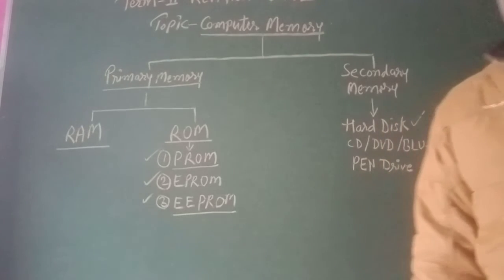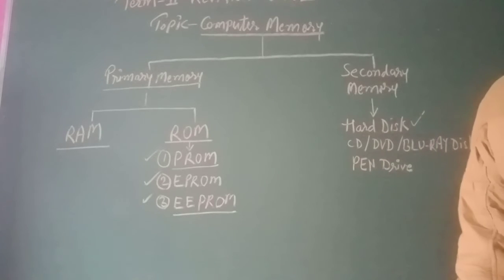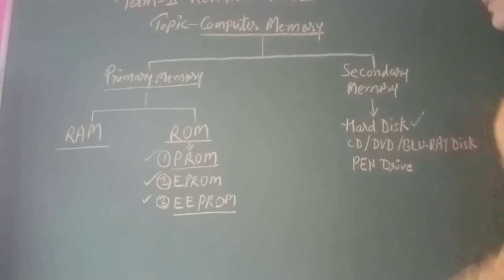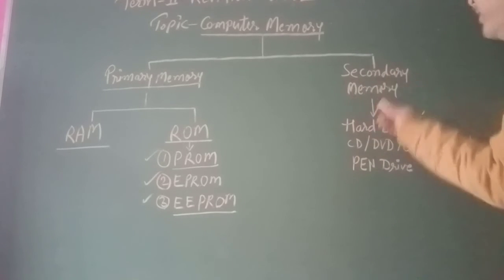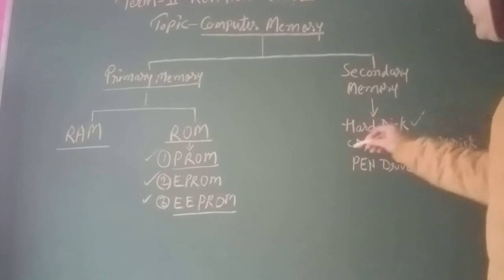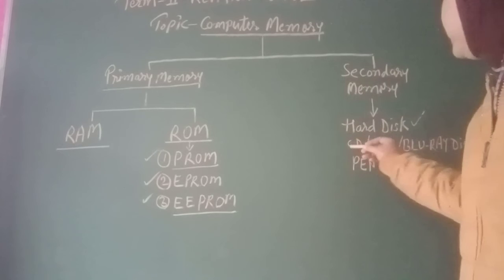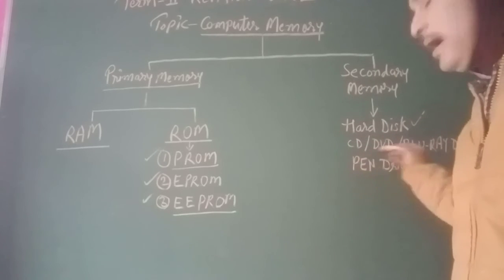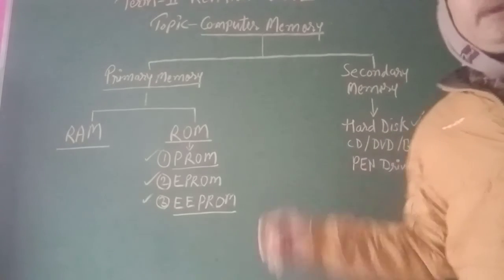Some examples of secondary memory storage devices are: hard disk, CD, DVD, Blu-ray disk, and pen drive.